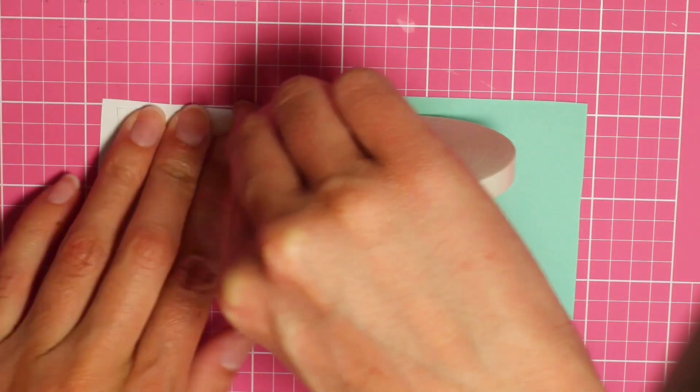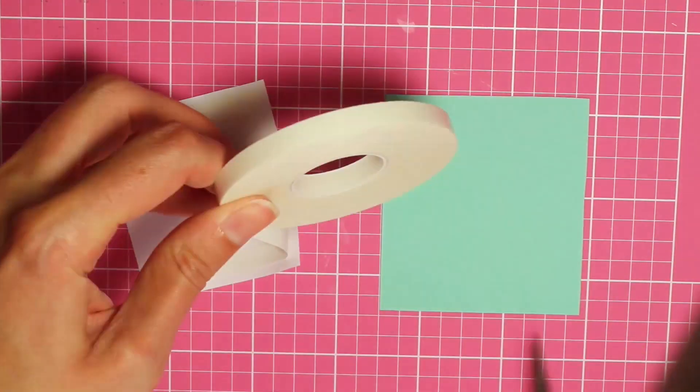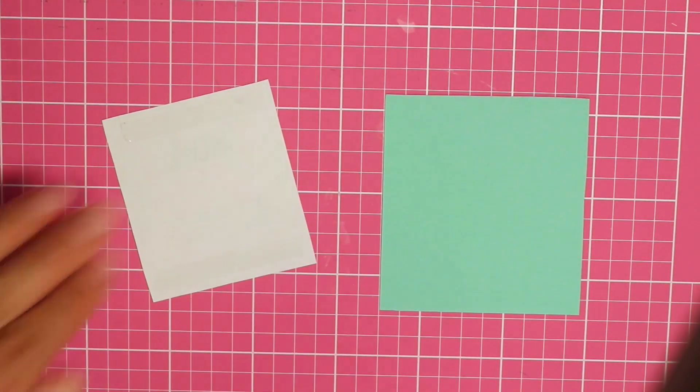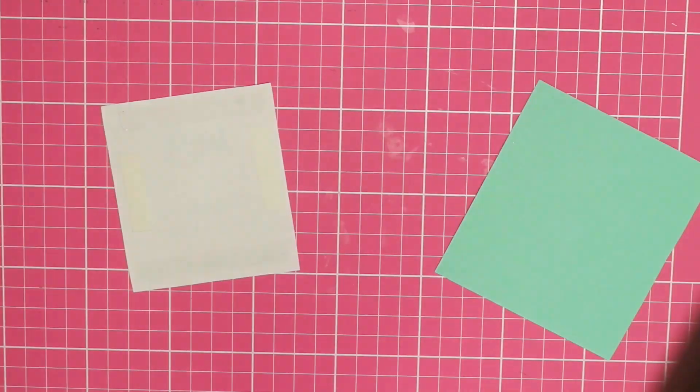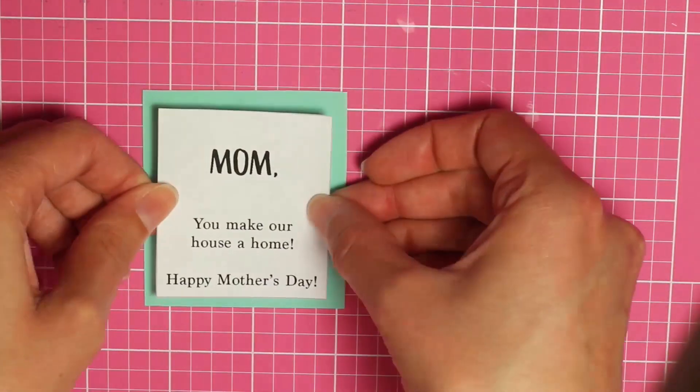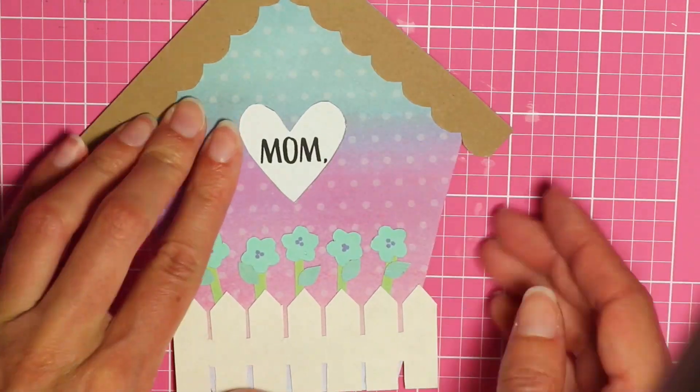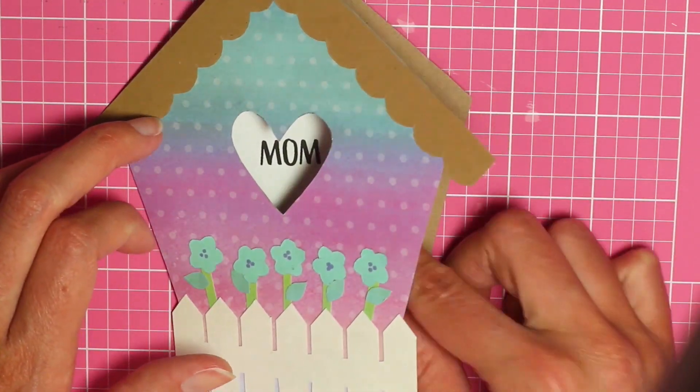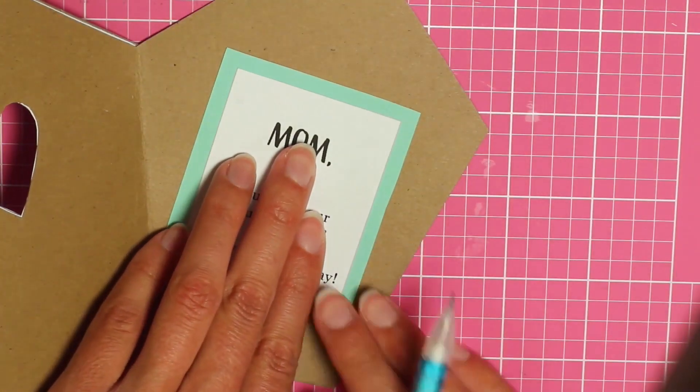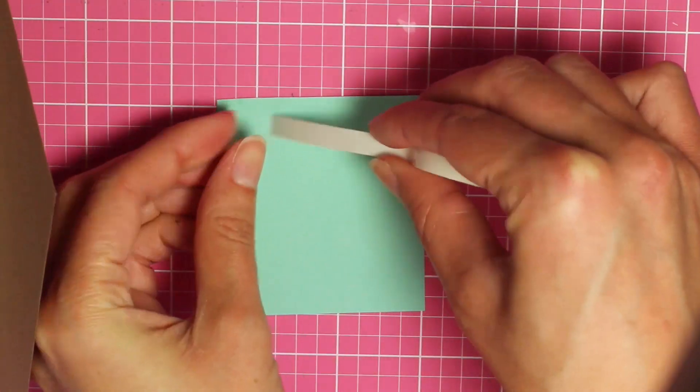So I'm just going to use some of that tape once again to attach it. Just centered it and pressed it in place. And then you want to line this up so the mom shows right centered in the heart. And then you can use a pencil to mark where you need to put the square.